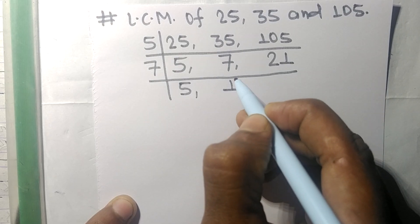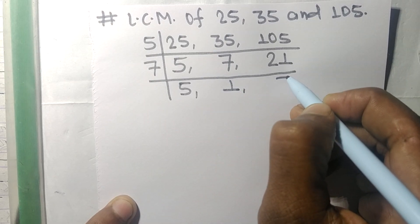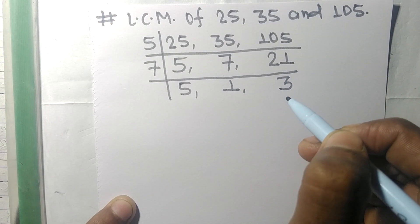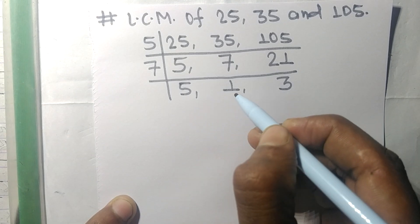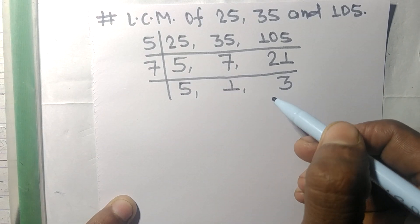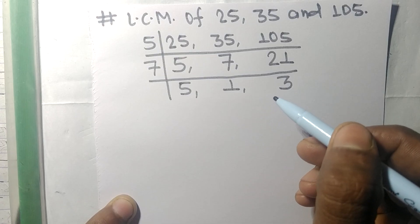7 times 1 means 7, 7 times 3 means 21. So now the numbers 5, 1, and 3 are not divisible by the same number.